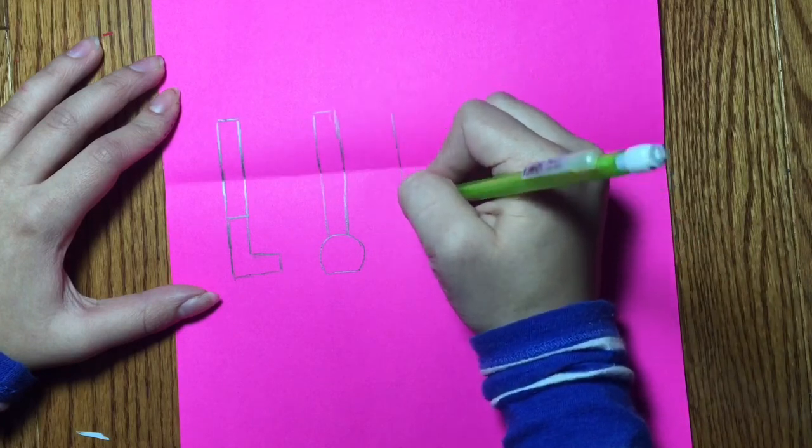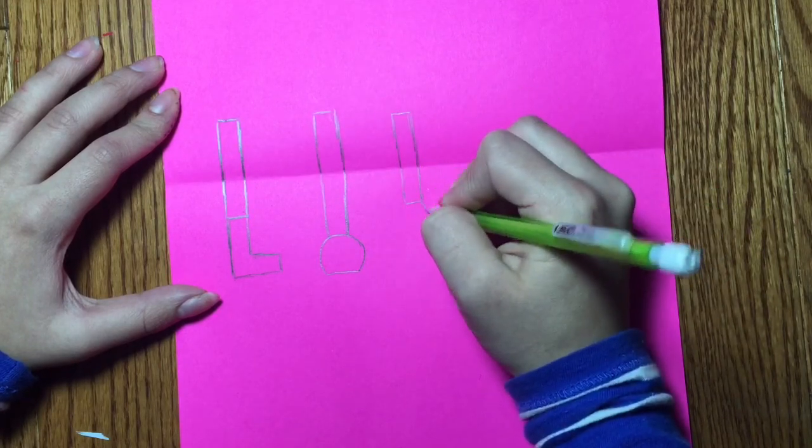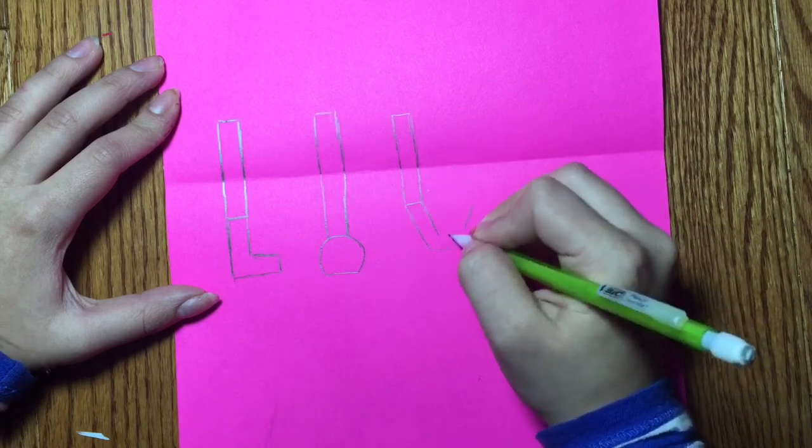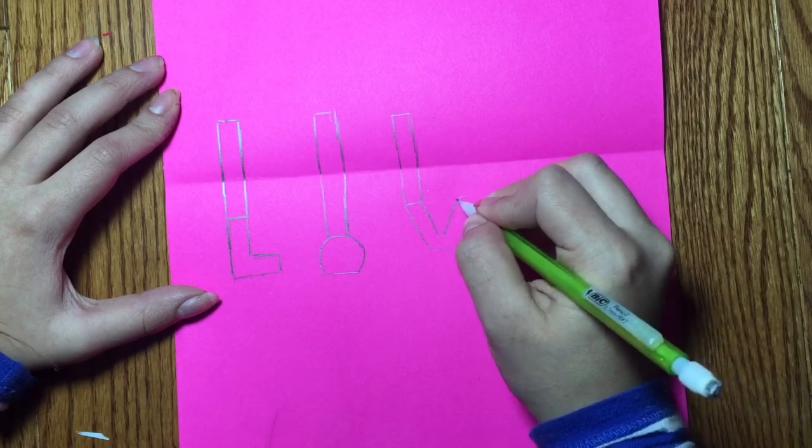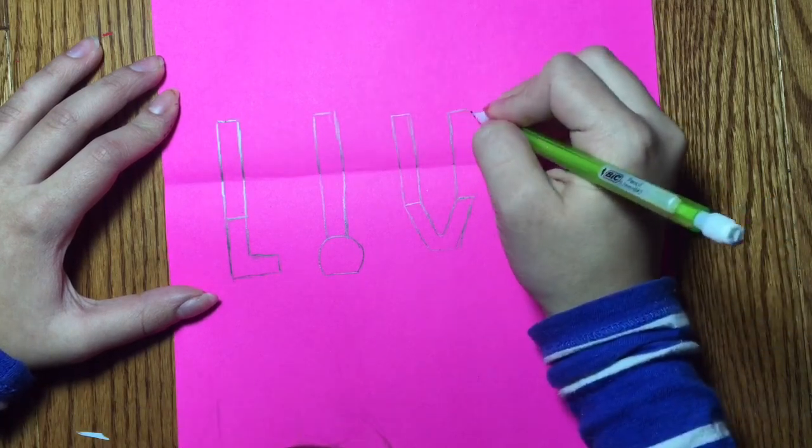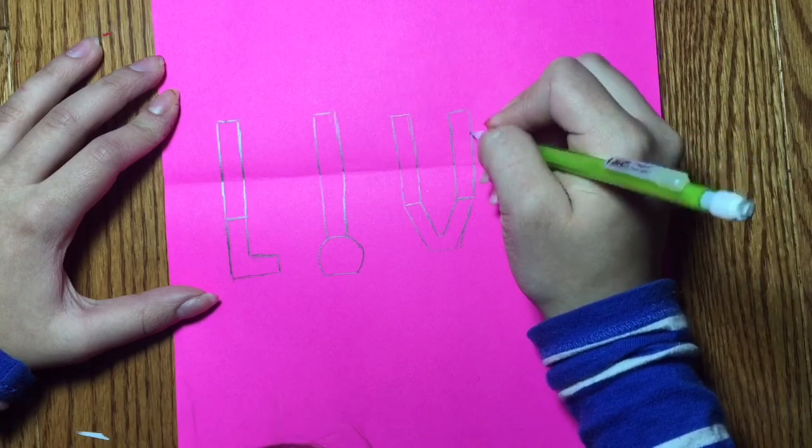After you draw your letter O, you're going to draw two more rectangles for the letter V. Finally, you're going to draw your last rectangle for the letter E.